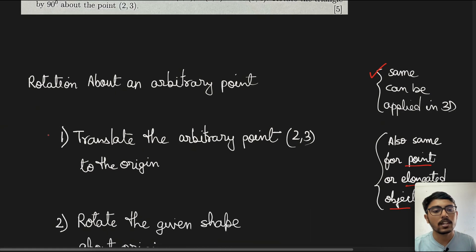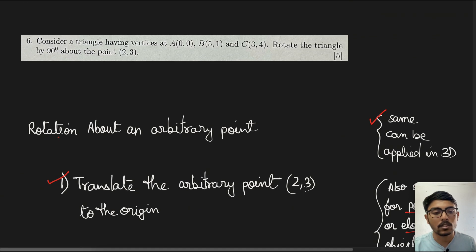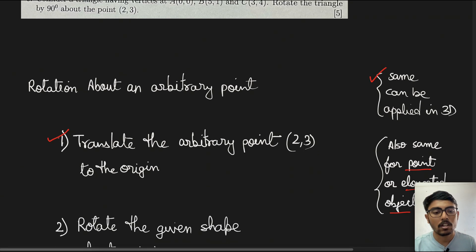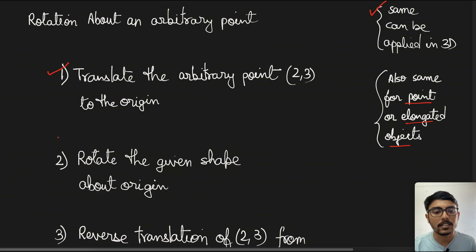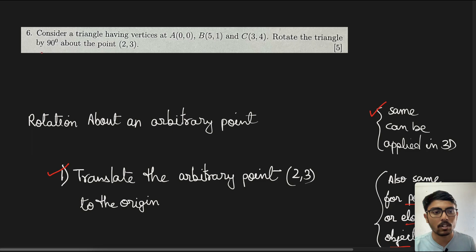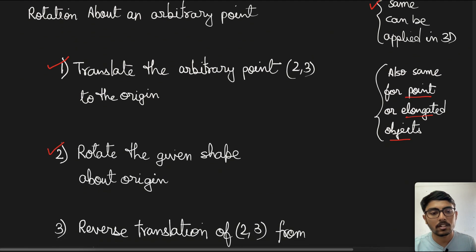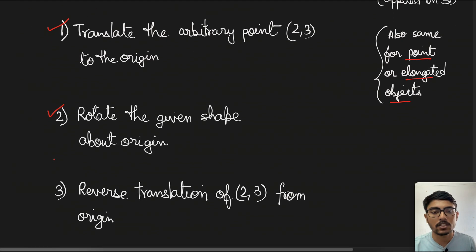First, we translate the arbitrary point, that is (2,3) in our case, to the origin. Second step is rotate the given shape, which is the triangle in our case, about the origin, which is exactly what is being asked. Third will be the reverse translation of the initial translation that we did, that is of point (2,3) about the origin. So these are the steps that we are going to follow.